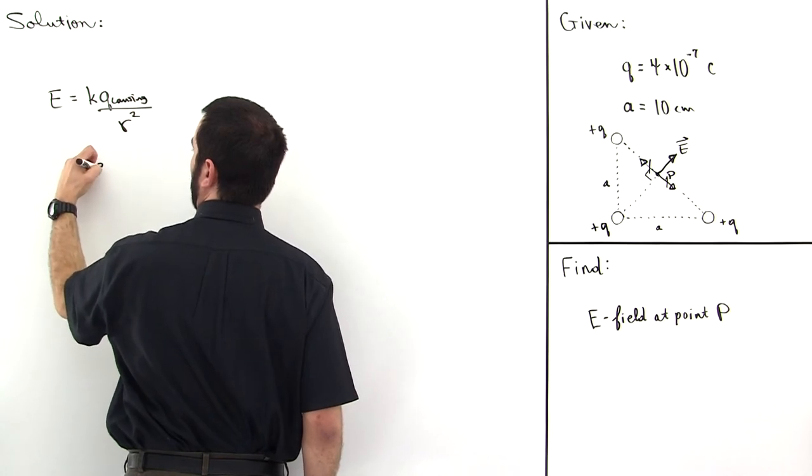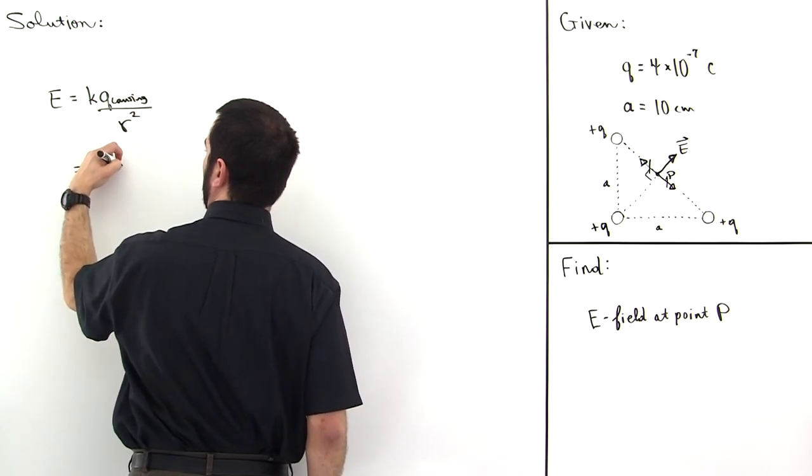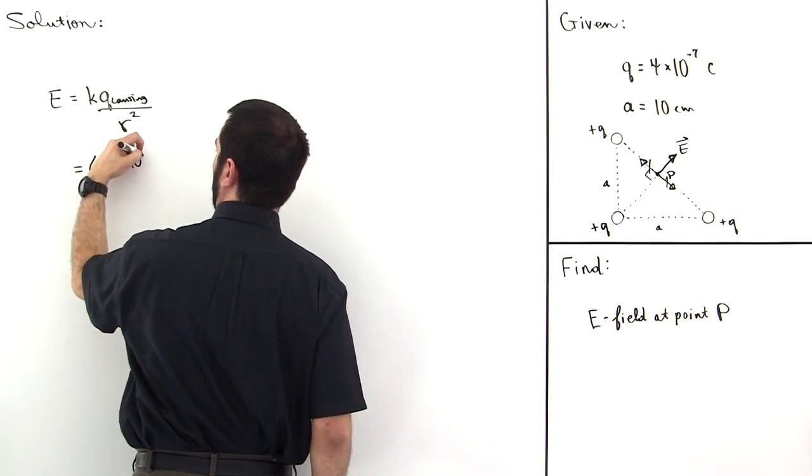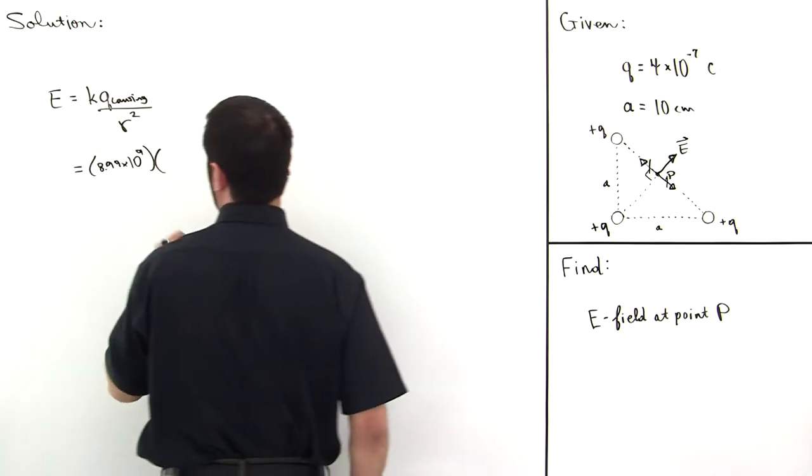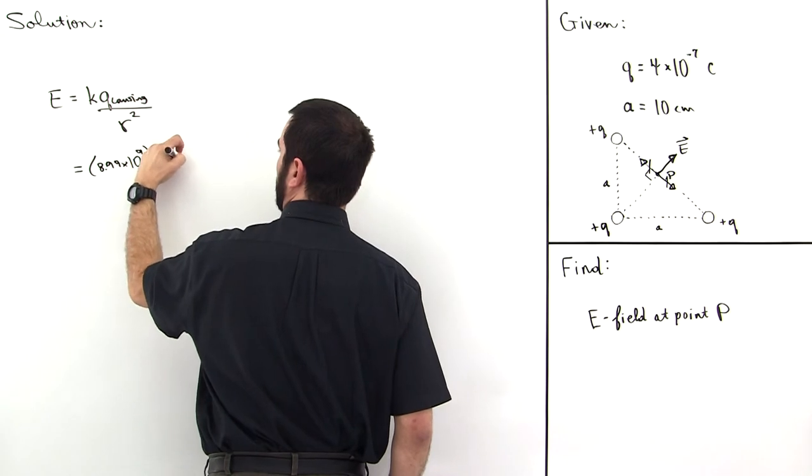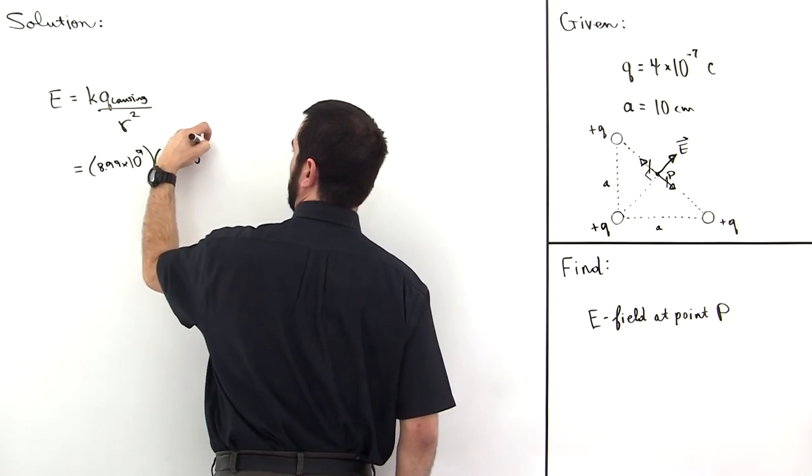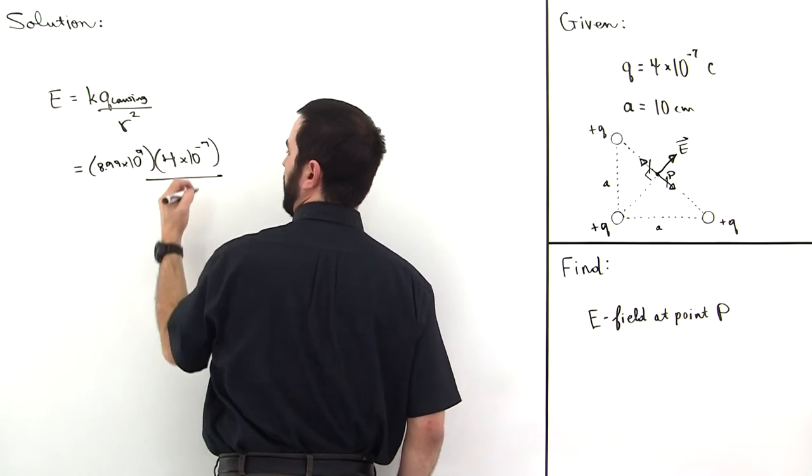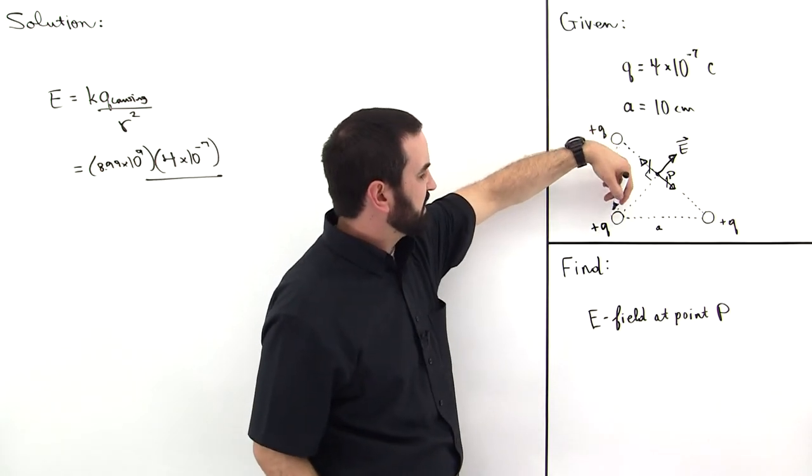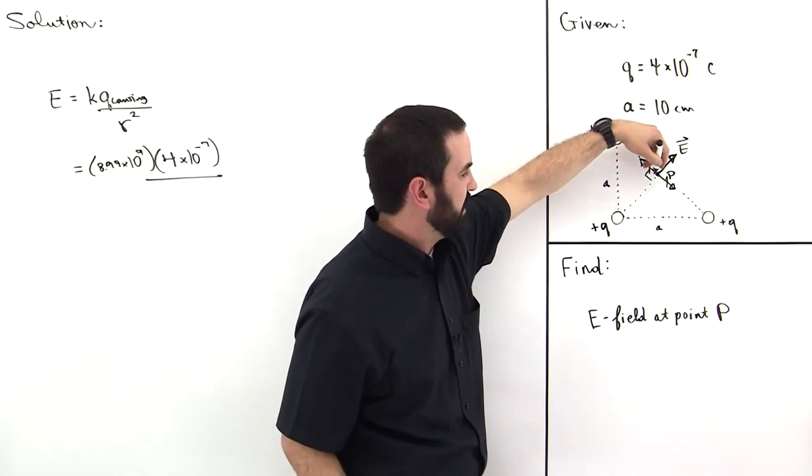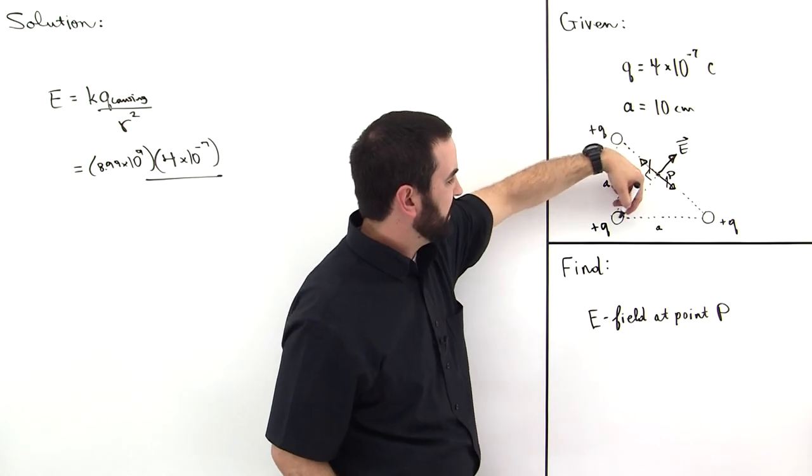So this is 8.99 times 10 to the 9 times Q causing 4 times 10 to the minus 7, and then divided by R squared. But R is going to be the distance from the charge to the point of consideration which is right here, so we need this distance here.